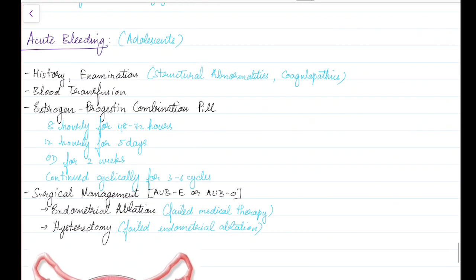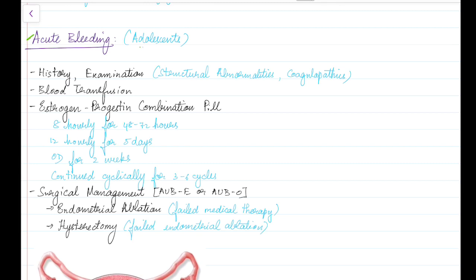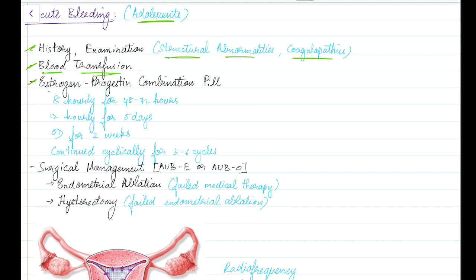Now let us see about the management of acute bleeding, which is more common in adolescents. A thorough history and examination should be taken to rule out structural abnormalities and coagulopathies. Blood transfusion should be done if hemoglobin is less than 5 g/dL. The medical treatment of choice is estrogen-progestin combination pills, given 8-hourly for the first 48 to 72 hours, followed by 12-hourly for 5 days.